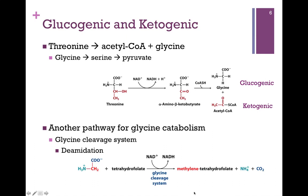There is another pathway for glycine catabolism called the glycine cleavage system, and that's illustrated at the bottom of the screen here. Here's our very simple glycine amino acid, colored in three different parts. The methylene group is transferred to that important cofactor tetrahydrofolate. The carboxyl group comes off as CO2, and the amine group comes off as ammonium ion. So we have literally cleaved glycine into its three component parts.